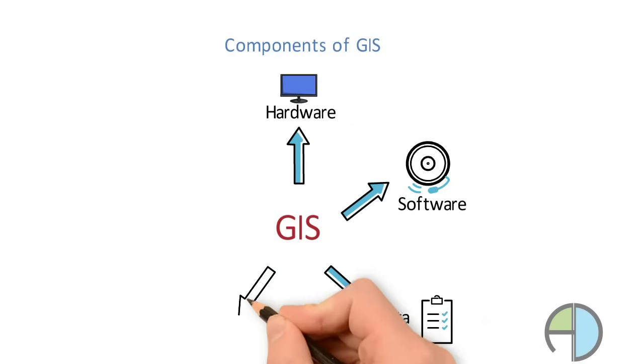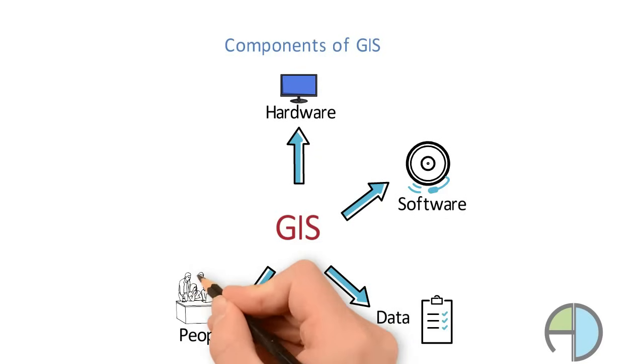Next component is the people who use the GIS system, who manage the data, who update the data. So people play a very critical role in keeping the data up to date.